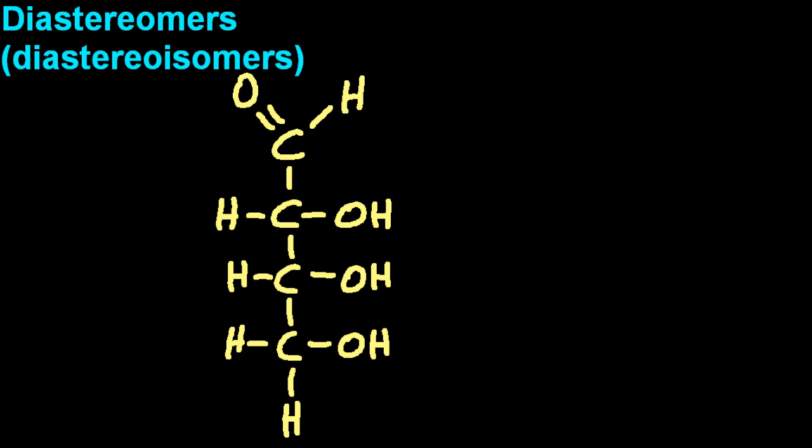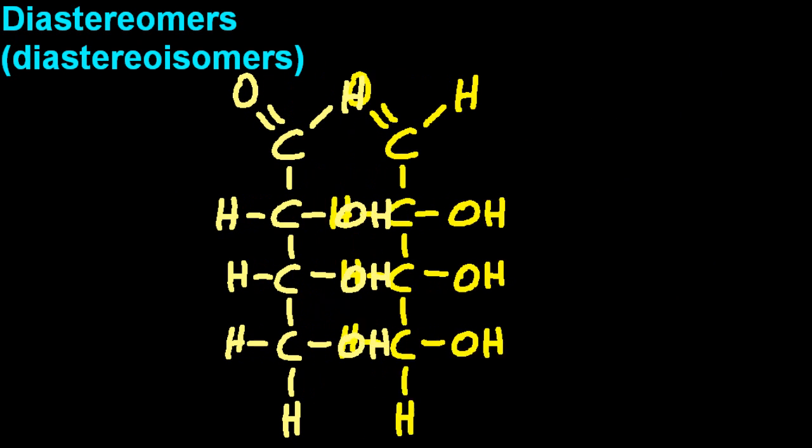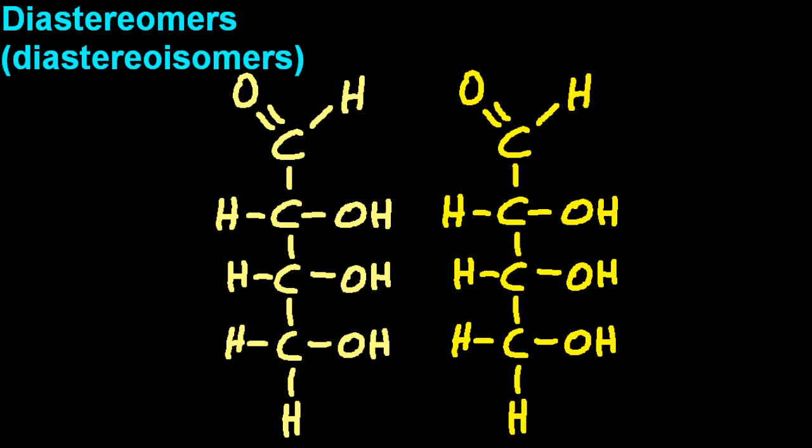Let's start off with this simple example. There's two chiral carbons in the middle. Now I've just got to mess up one of the chiral centers. I've got to change it, and the easiest way to do that is swap any two of the groups on the chiral center.